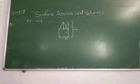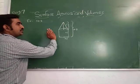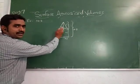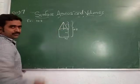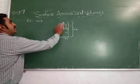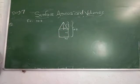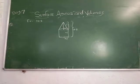Required canvas means we should find the curved surface area of the cylinder and the curved surface area of the cone. By adding these two we will get the total area of the tent, that is the total curved surface area, which gives us the total required canvas.